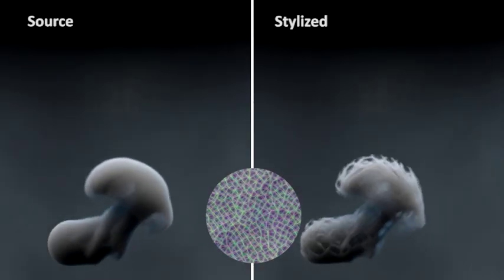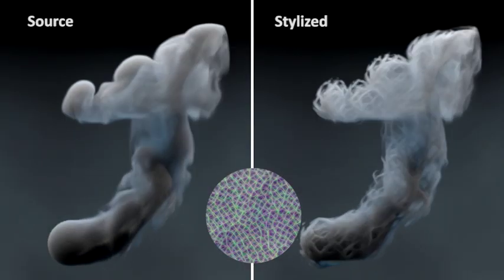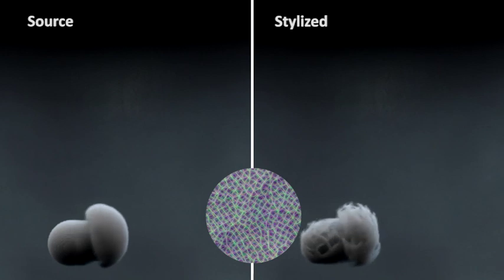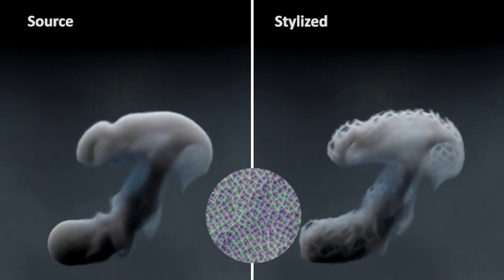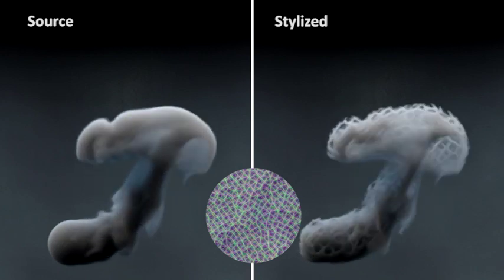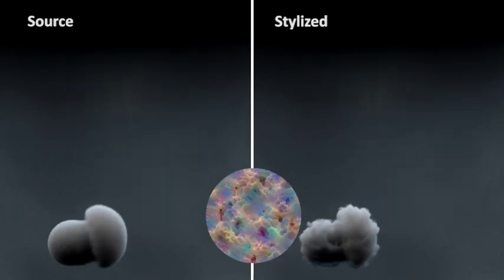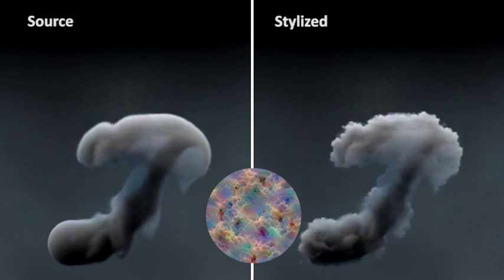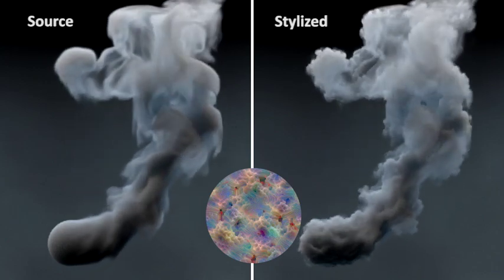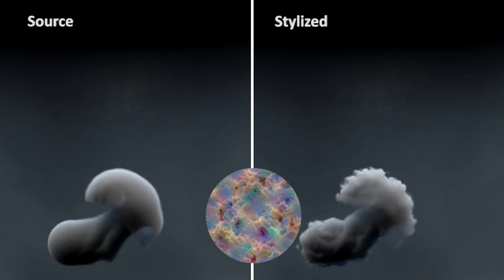Our method allows novel semantic transfer for stylizing smoke. Densities can be modified to portray patterns and shapes, such as the net structure shown in the video sequence. Manipulating shallow layers of the CNN result in simpler structures, while manipulating deeper levels will transfer more intricate motifs, as demonstrated by these cloud patterns.